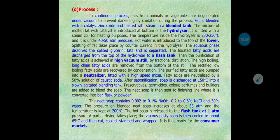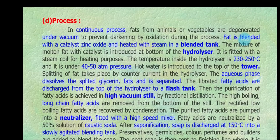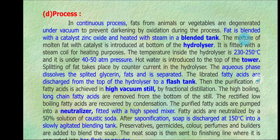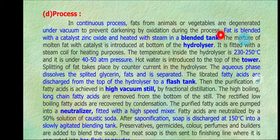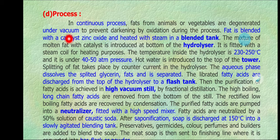Now let us see what actually happens at different stages of the continuous process. Fats from animal or vegetable sources are degassed under vacuum to prevent darkening by oxidation during the process. This means the fats are purified under vacuum, because at higher temperature fats may be oxidized and darkening may occur — so we inhibit the oxidation process. The fats are then blended with the catalyst zinc oxide.